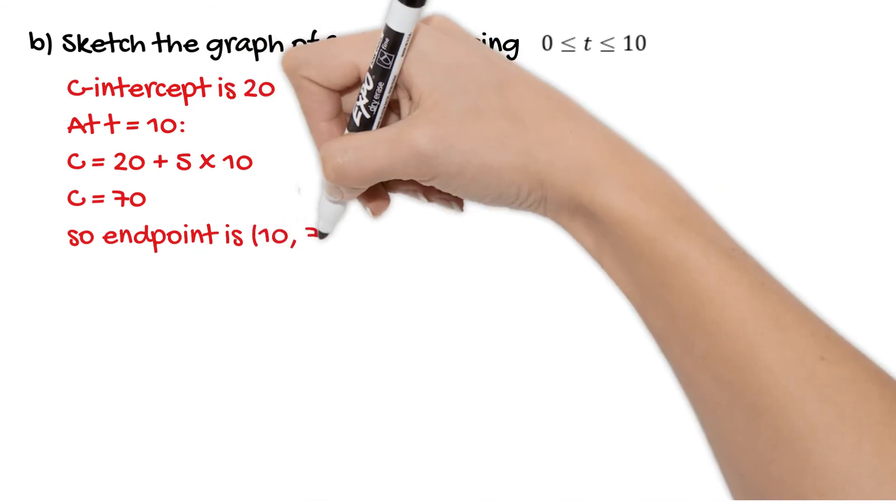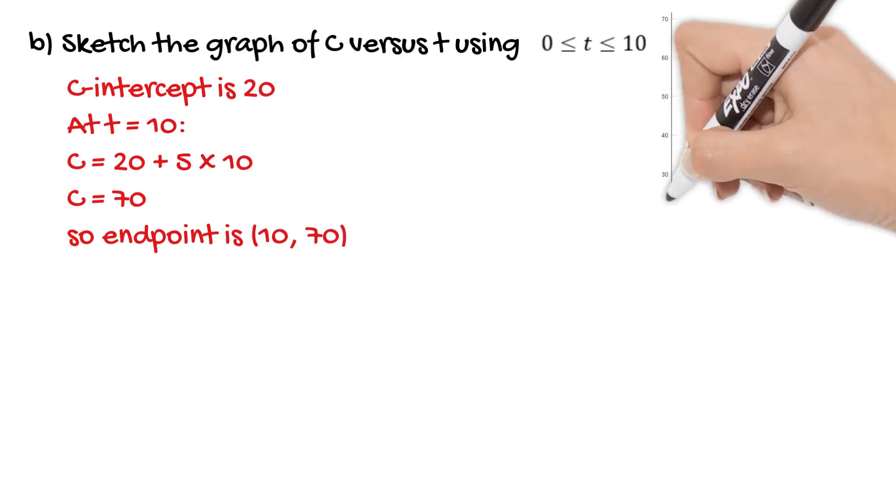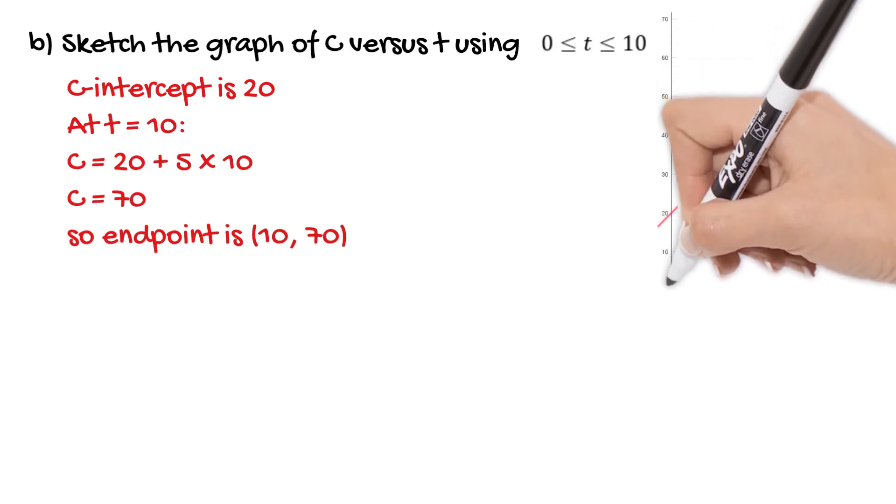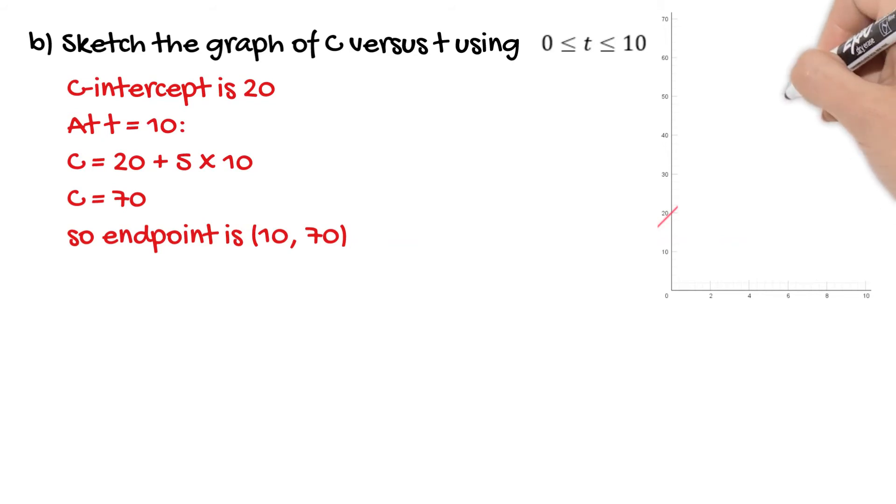So our endpoint lies at (10, 70). Then we can simply join up our y-intercept and (10, 70) and there's our graph.